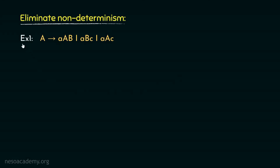Consider the first example. Observe the production rules. A can be rewritten as small a, capital A, b — or small a, b, small c — or small a, capital A, small c. Now, in order to eliminate the non-determinism, we first need to identify the generic non-terminal A, along with the alpha — that is, the common prefixes — and also we need to identify the betas.